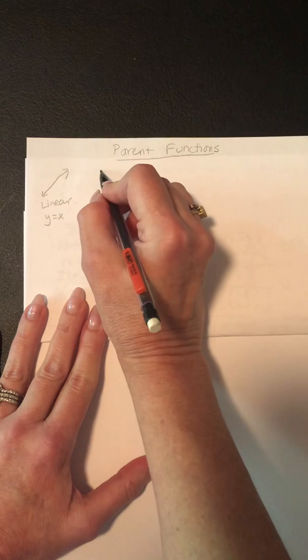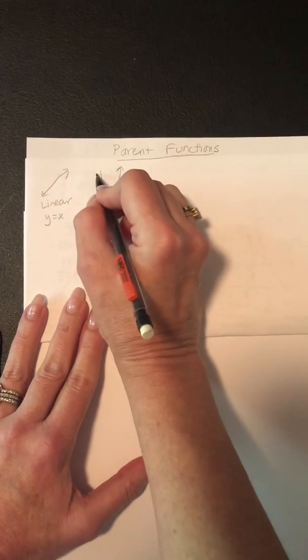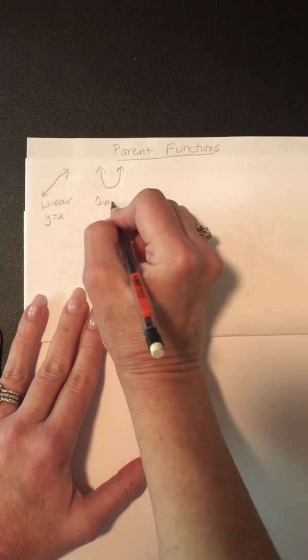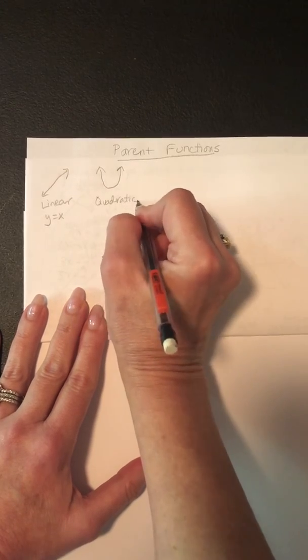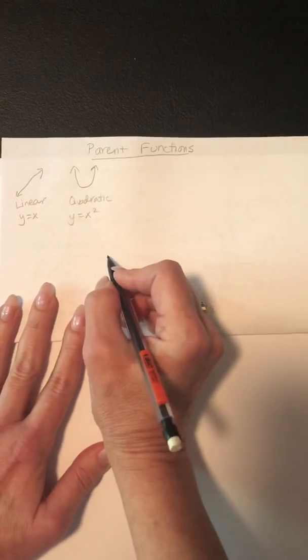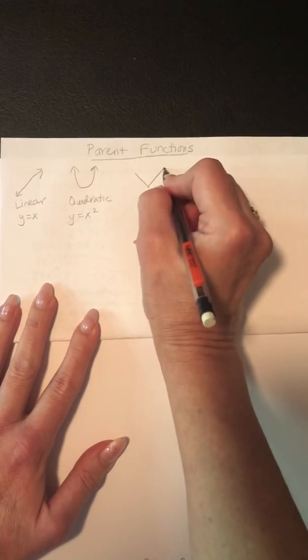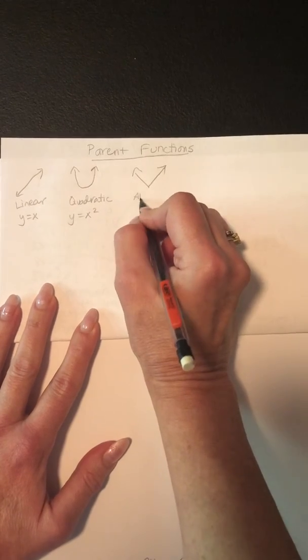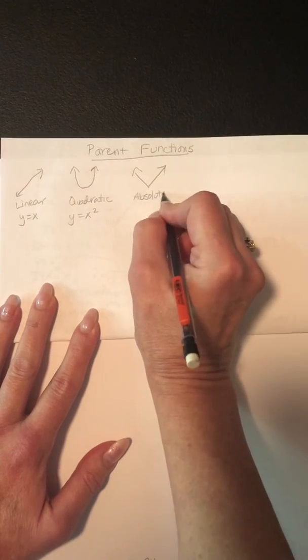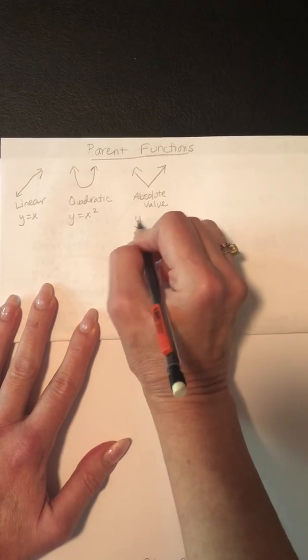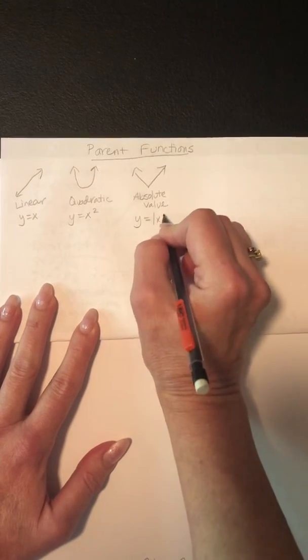If it's quadratic, which is the parabola, it's quadratic. And that's like y equals x squared. Then there's the absolute value, and that one is y equals the absolute value of x.